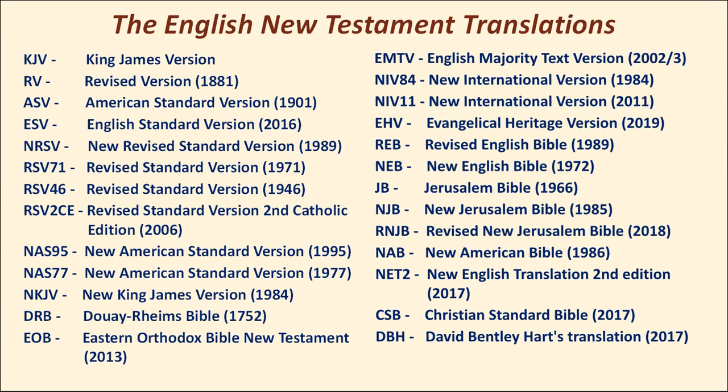These are the English New Testament translations I'm evaluating in this video — there are 26 of them. Some you may not be very familiar with: DBH is David Bentley Hart's translation, which I'll be reviewing at some point in the future. DRB is the Douay-Rheims Bible. EHV is the recently published Evangelical Heritage Version. EMTV is Paul Esposito's English Majority Text Version.